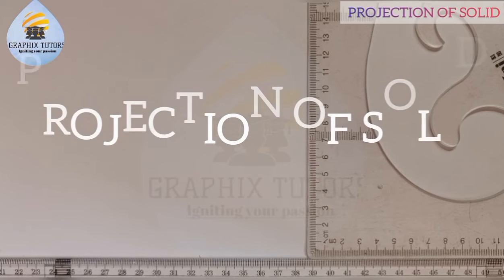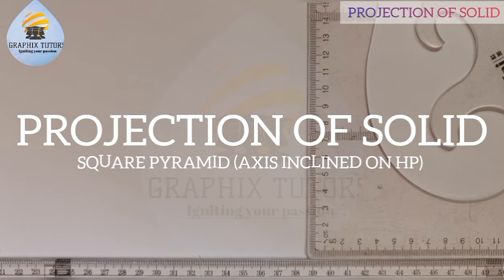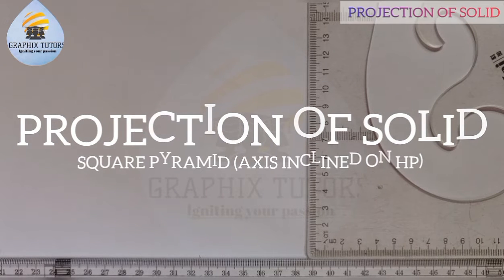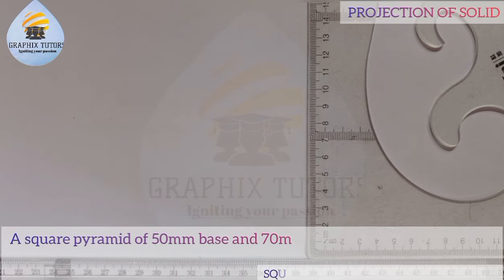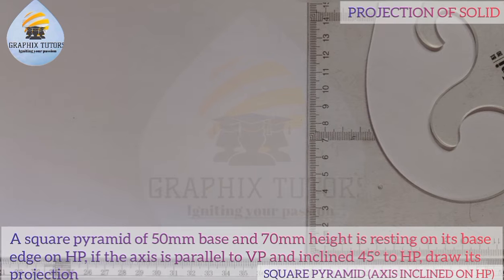Hello everyone, my name is Graphics. In this video we want to study a problem involving reduction of solids, looking at a square pyramid whose axis is inclined to the horizontal plane. The question says: a square pyramid of 50 millimeter base and 70 millimeter height is resting on its base edge on HP. The axis is parallel to VP and inclined 45 degrees to HP. Draw its projection.